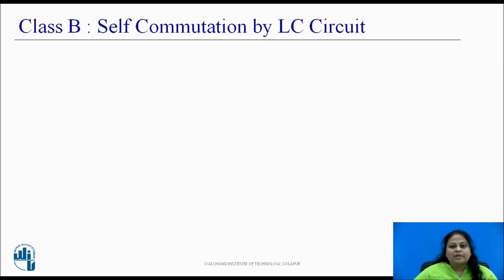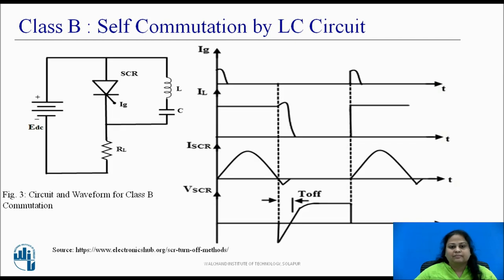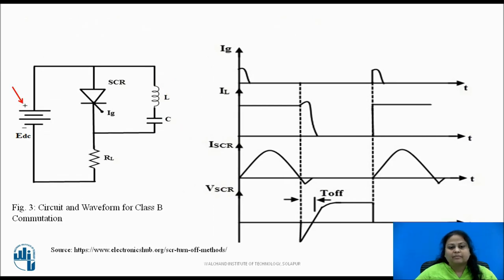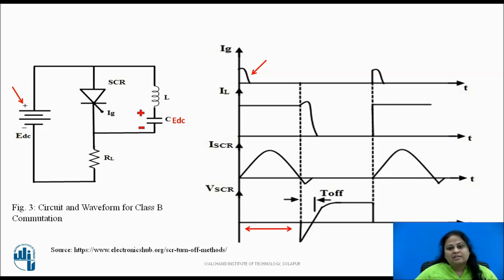Let us now see class B commutation, which is self commutation by an LC circuit. The figure shows the circuit and waveform for class B commutation. In this, an LC resonant circuit is connected across the SCR and the L and C components do not carry load current. When the DC supply is applied to the circuit before the SCR is triggered, the capacitor charges to the supply voltage EDC with the upper plate positive and lower plate negative as shown. When the gate pulse is applied, the SCR triggers and current flows in two directions: one through plus EDC, through SCR, through RL, to minus EDC, and another through L and C.